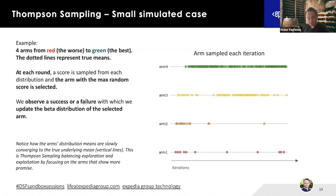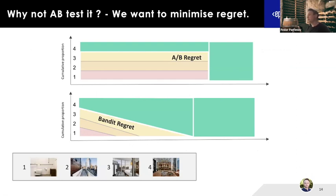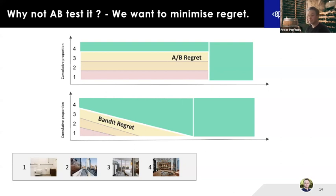How does it compare to A/B testing? A/B testing splits traffic uniformly between options for a predetermined period. If one image is terrible — like showing a toilet — you still send equal traffic to it throughout. The bandit, by contrast, deactivates poor-performing images quickly and repurposes traffic toward more promising ones, making it converge much faster.